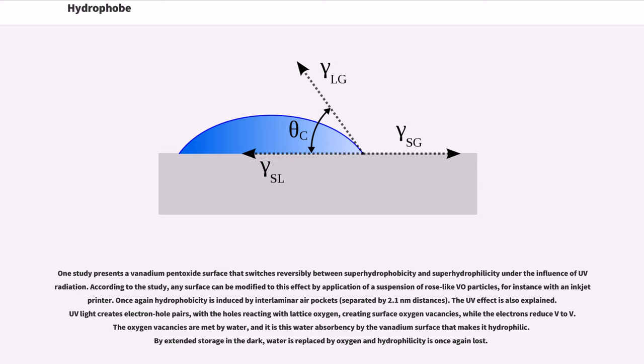Once again hydrophobicity is induced by interlaminar air pockets, separated by 2.1 nanometer distances. The UV effect is also explained. UV light creates electron-hole pairs, with the holes reacting with lattice oxygen, creating surface oxygen vacancies.